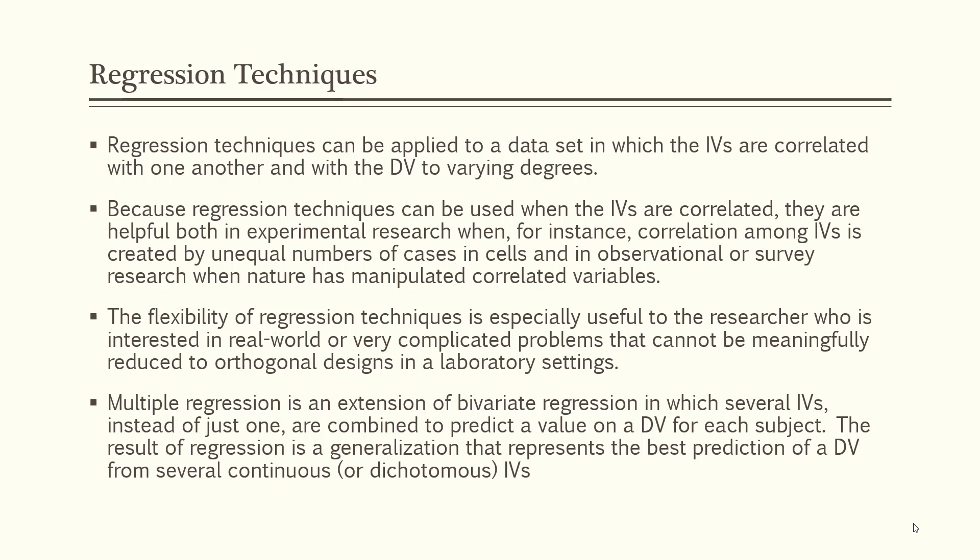Multiple regression is an extension of bivariate regression — what we did with simple linear regression where we looked at height and weight — in which several independent variables, not just one, are combined to predict the value of the dependent variable. We'll be using the regression equation but just adding additional independent variables. It's a generalization representing the best prediction of the dependent variable based on several continuous or dichotomous independent variables.